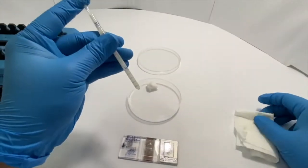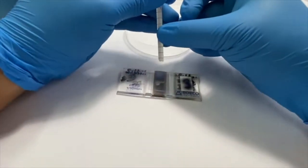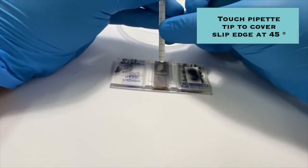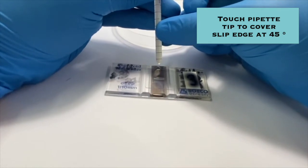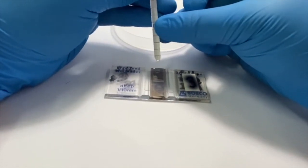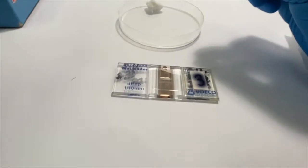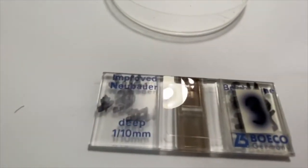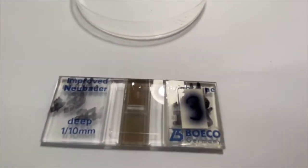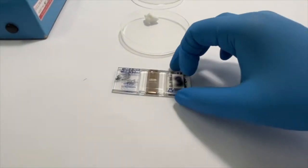Charge the hemocytometer by holding the pipette at a 45 degree angle, and touch the tip of the pipette to the coverslip edge where it meets the chamber floor. The chamber should be filled with a steady flow of fluid, and then completely fill the counting area without overflowing or undercharging.